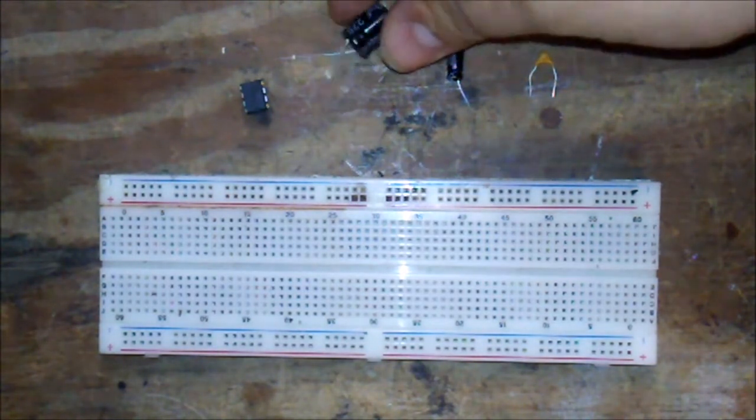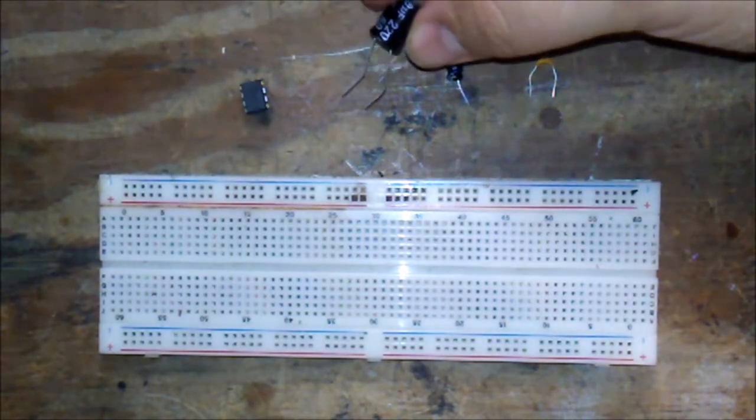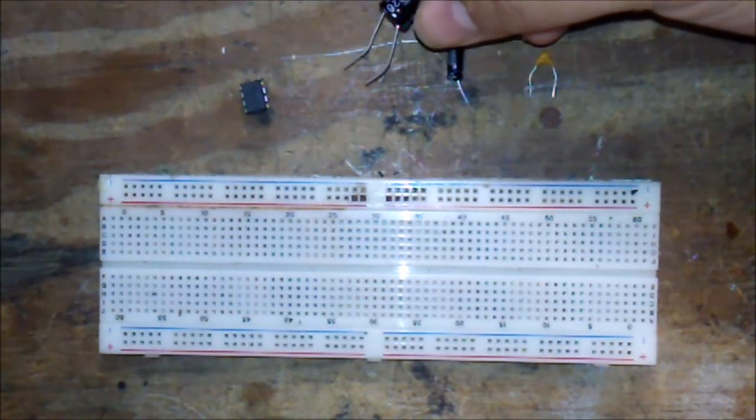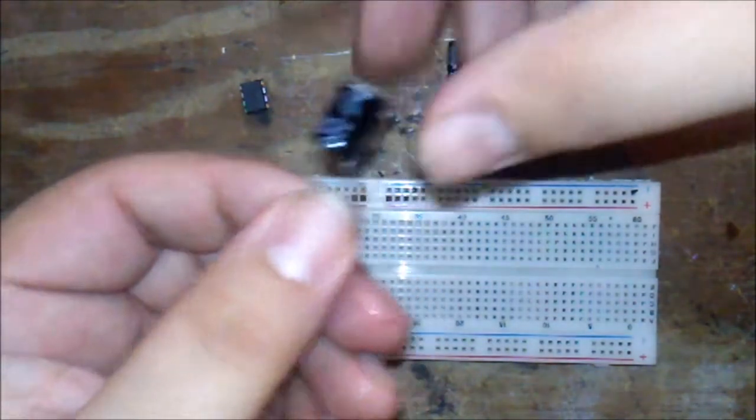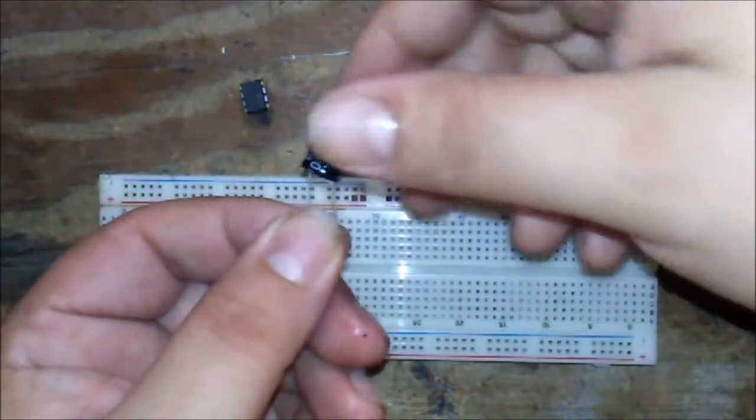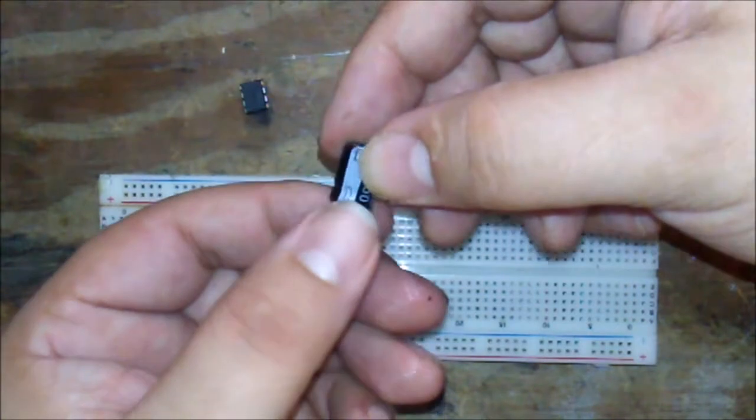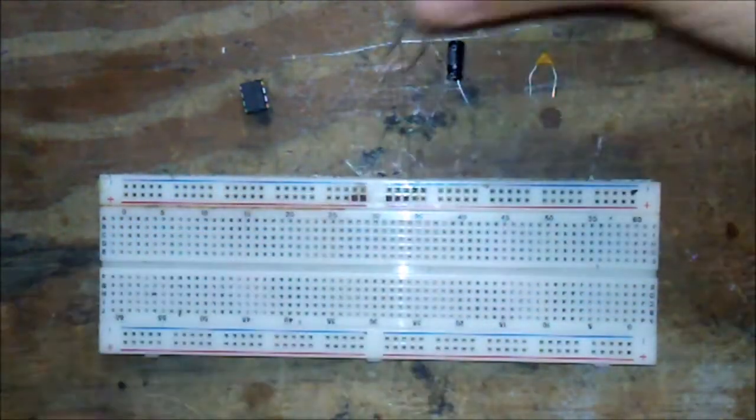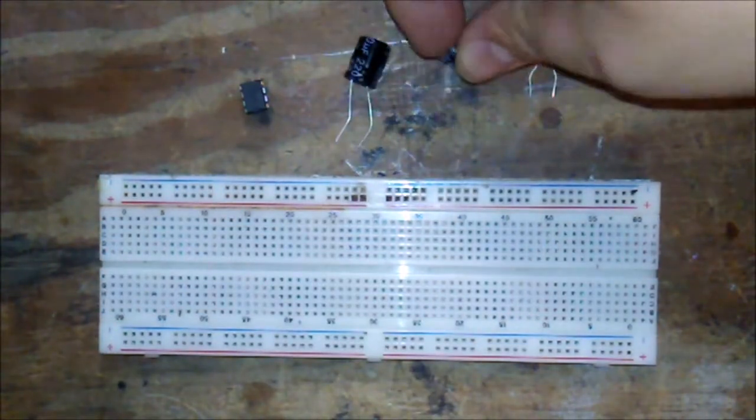You need a 220 microfarad electrolytic capacitor. Now most electrolytic capacitors will have a long lead and short lead like an LED. However I cut them because it makes it easier to put them on the board. But on the capacitors you're gonna see a nice little strip. The strip means negative, ground, whatever your terminology.